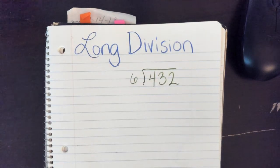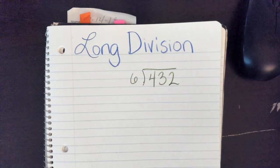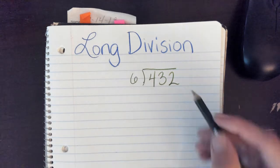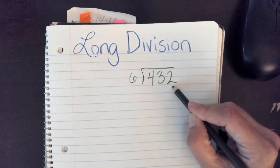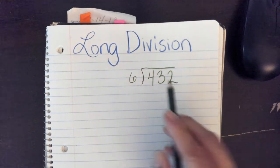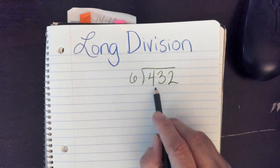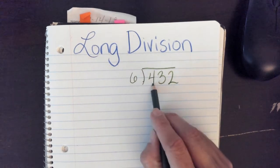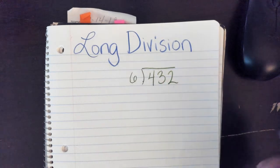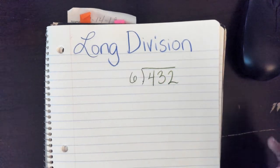I know 432 can be evenly divided by 6 because it's even, and the digits add up — 4 plus 3 plus 2 equals 9.